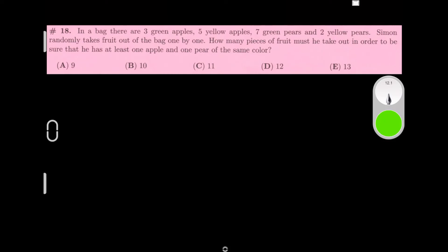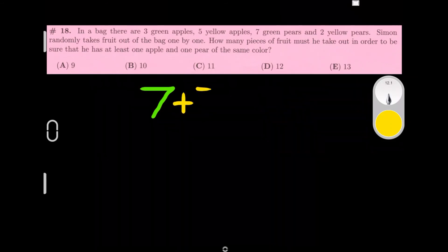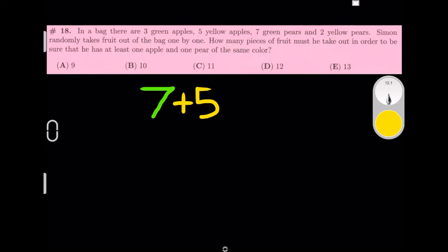We can start off with 7 green pears, because that's the greatest. We can do the 7 green pears, and then the next greatest is the 5 yellow apples. That would equal 12. Because those were both different types of colors, the next one we pick out is going to be making a pair with one of these. So what we would do is add 7 and 5, and because we're going to add one more, it would be 13. So our answer would be 13.